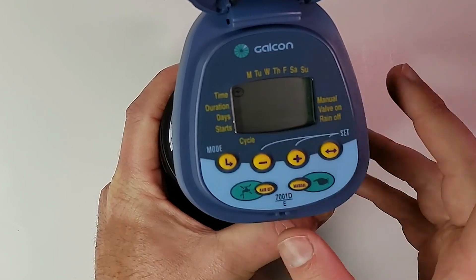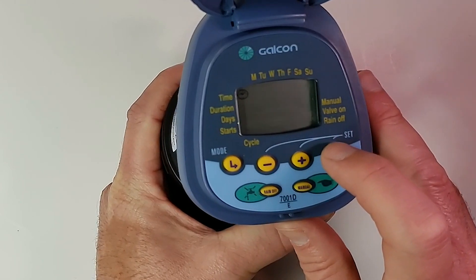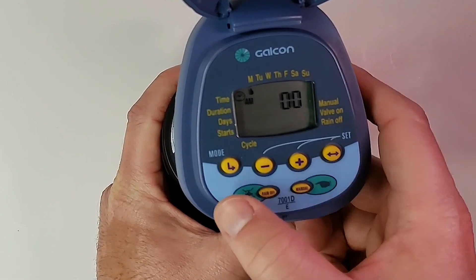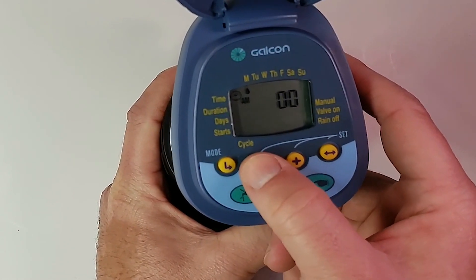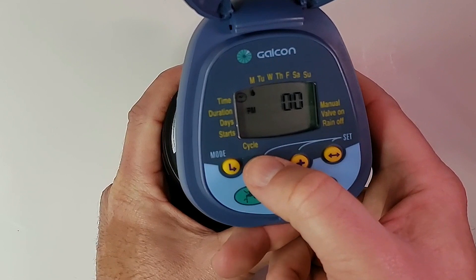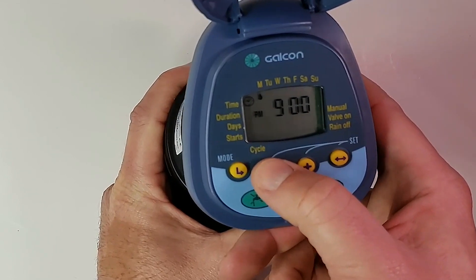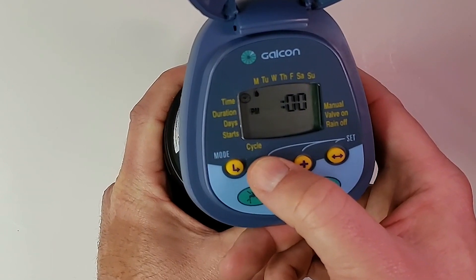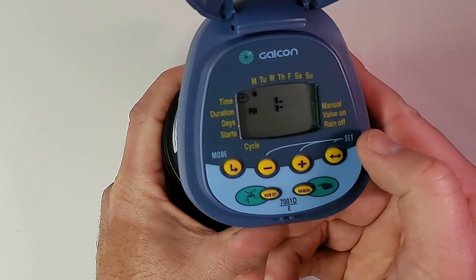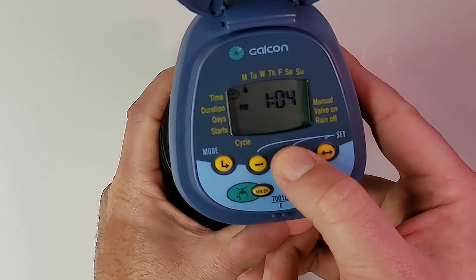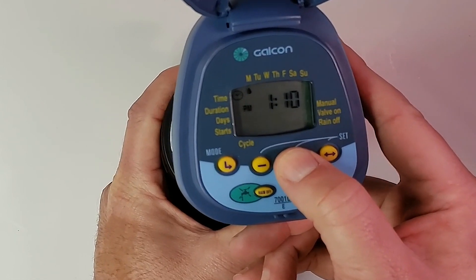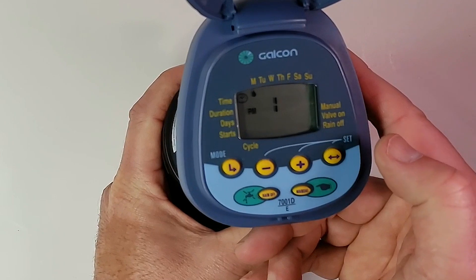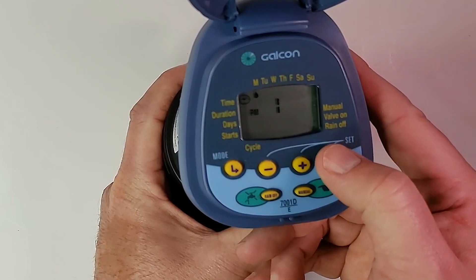The time right now is 1:15. So we're going to hit the set button and then we're going to hit minus until we get to 1 PM. Then we're going to hit the set button again and we're going to make this 1:15.